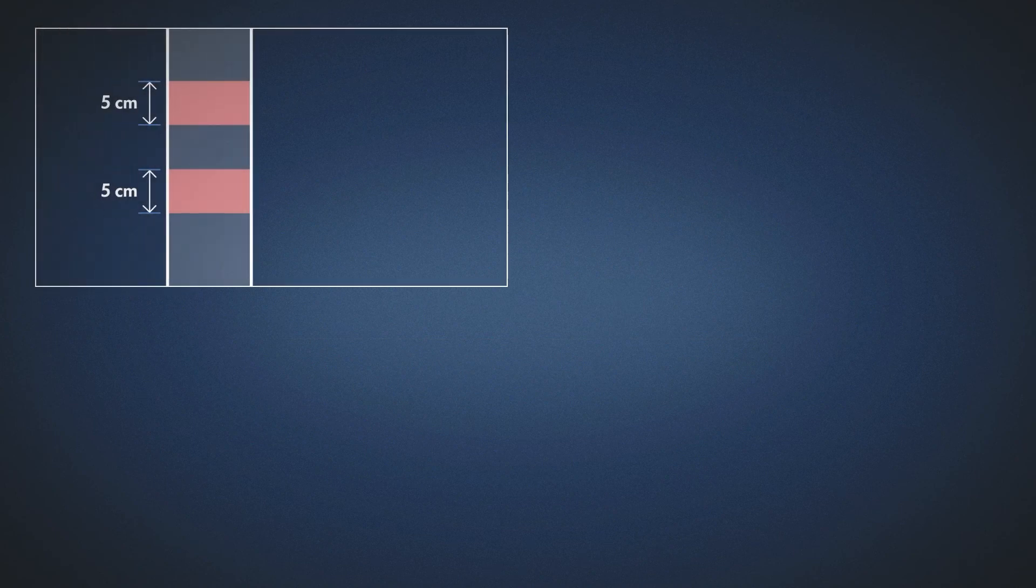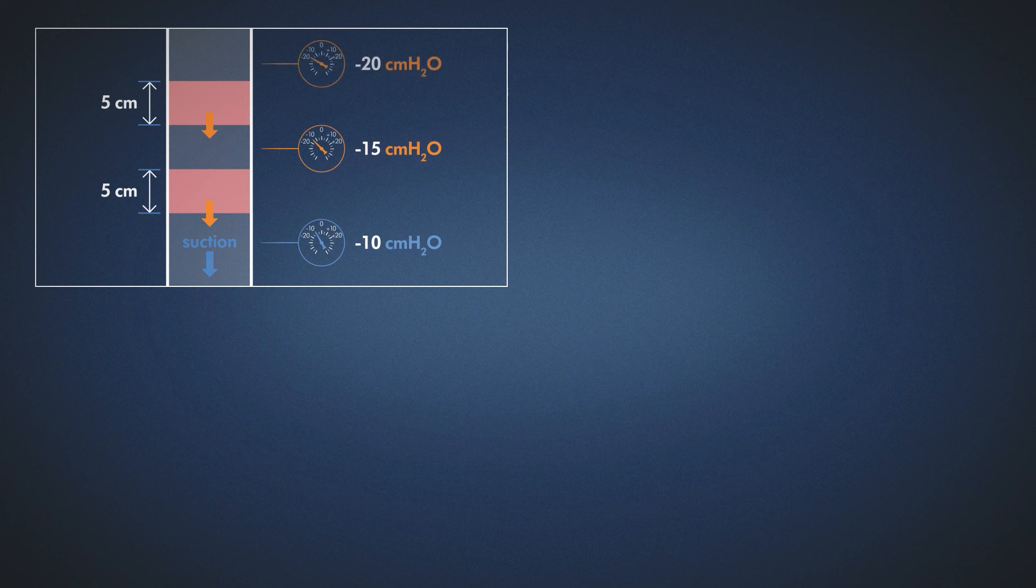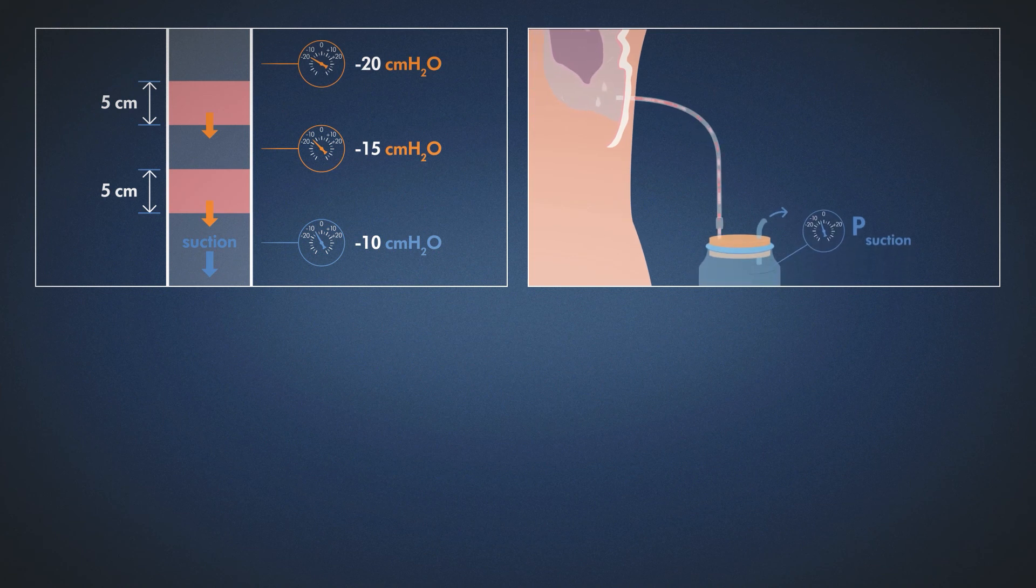Summary. Gravity acts on the fluid in a drainage tube and causes changes in the pressure at the patient's site relative to the suction set of the device. When the drainage tube is routed downward from the patient to the drainage device, the column of fluid in the tube causes a vacuum, which is added to the device's suction.